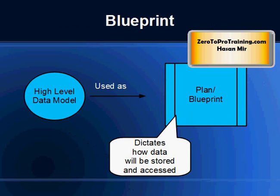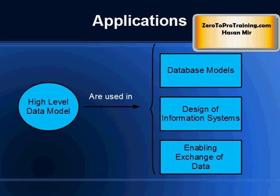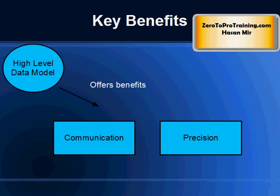A data model in software engineering is used as a plan for developing applications, specifically how data are stored and accessed. Typical applications of data models include database models, design of information systems, and enabling exchange of data. Communication and precision are the two key benefits that make a data model important to applications that use and exchange data.